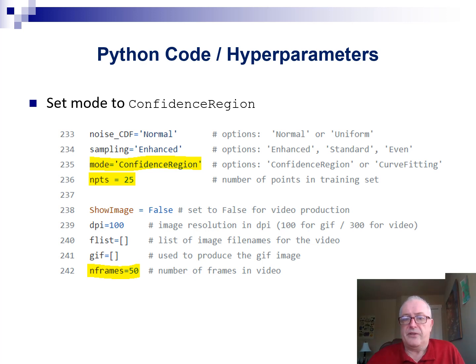There's a number of hyperparameters in the Python code. The one that we are interested in is the mode hyperparameter. You want to set it to confidence region, which is one of the important parts that the code is doing. The other part being the curve fitting and parameter estimation.